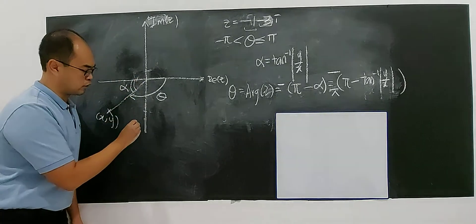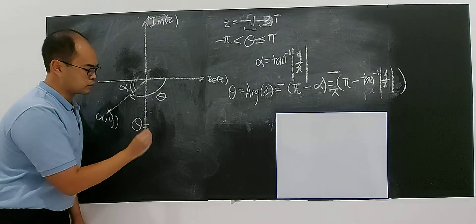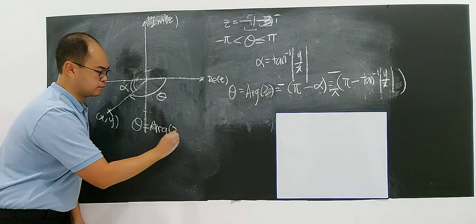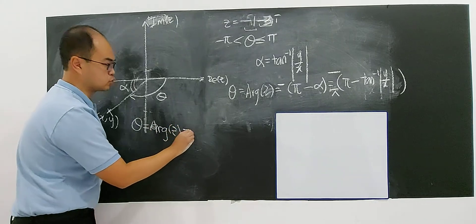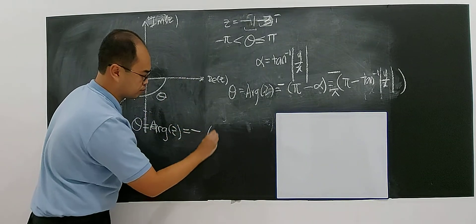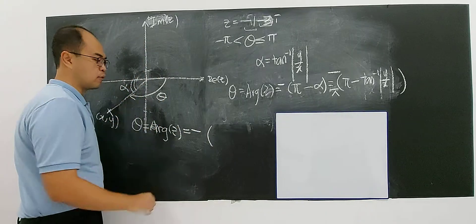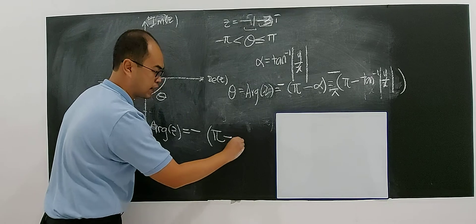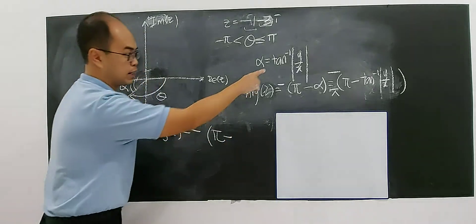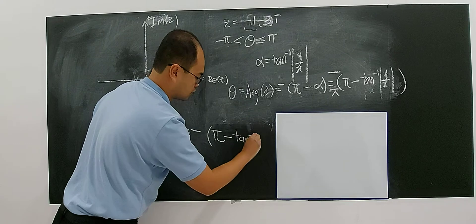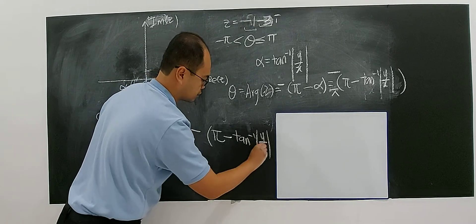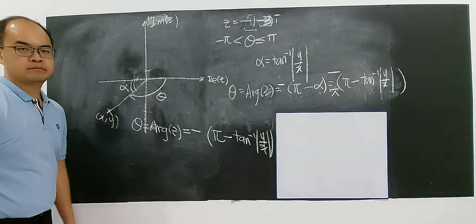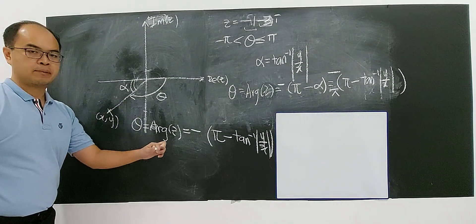The formula for the argument in the third quadrant will be: argument of z equals negative — because it's moving in the clockwise direction — so you take pi, 180, minus away the alpha. This alpha is always the same: you just apply the modulus to both the value of y and x. Then you will get your argument correctly by applying this formula.